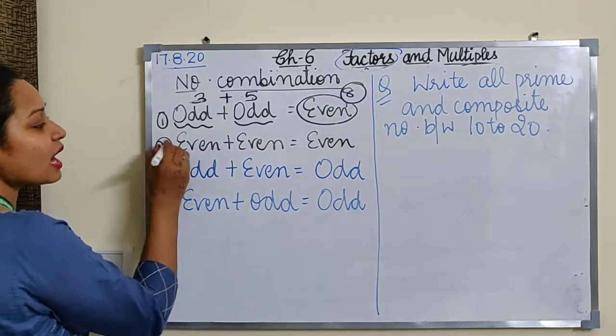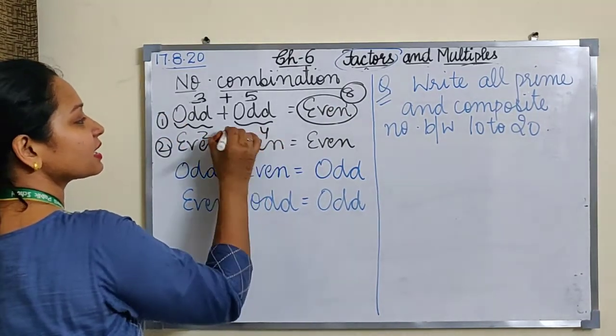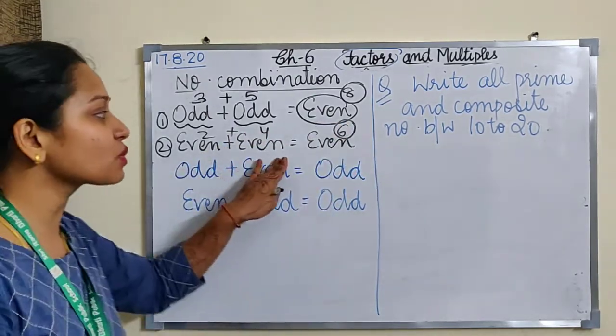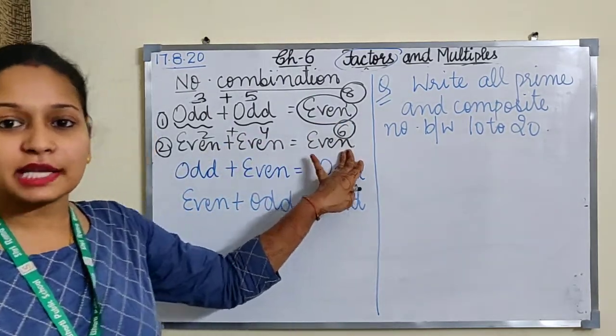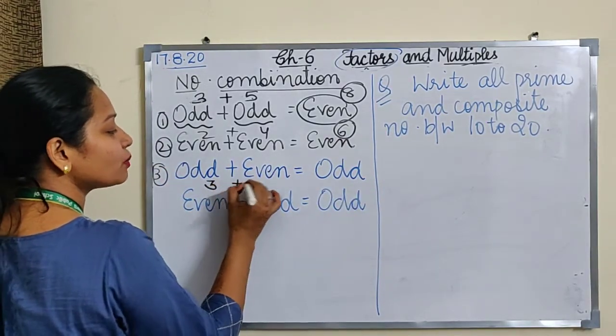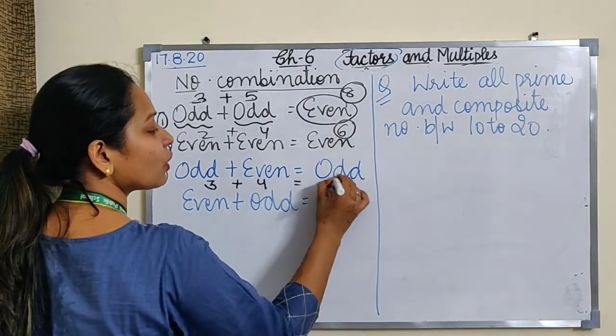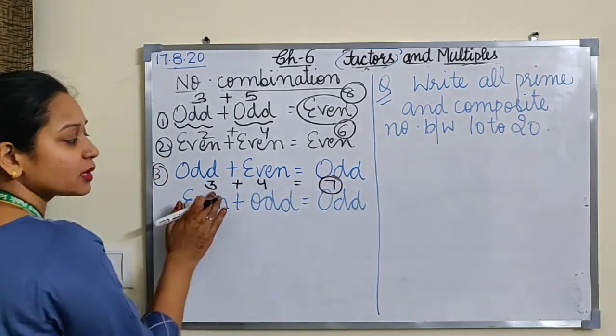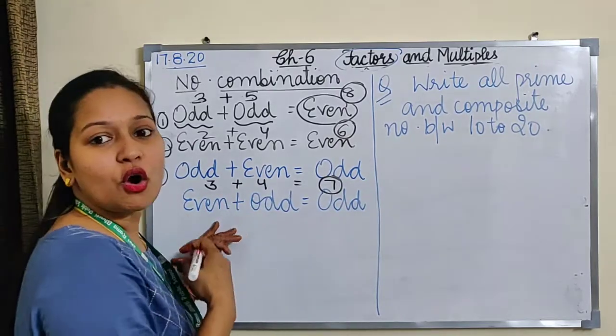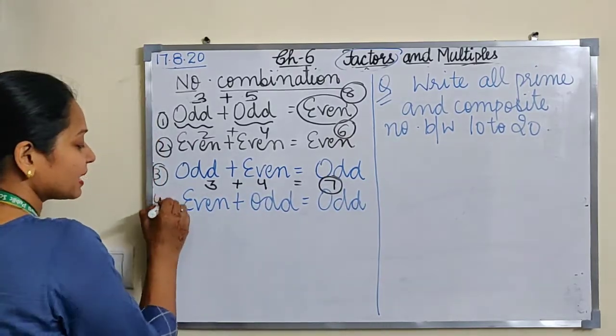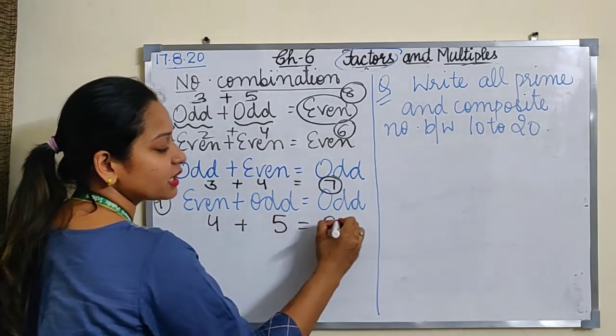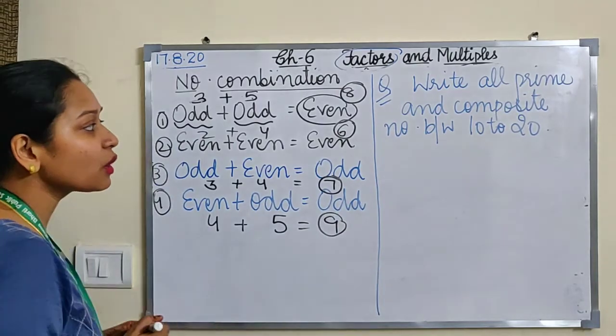Second, whenever I add 2 even numbers, let's say I add 2 plus 4, it will give me 6. When I add two even numbers, I will get an even number. Third, odd plus even is odd. If I add odd plus even, I'll get odd number as the sum, because 3 plus 4 gives me 7.